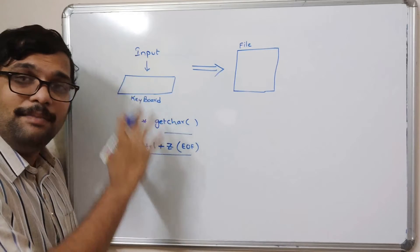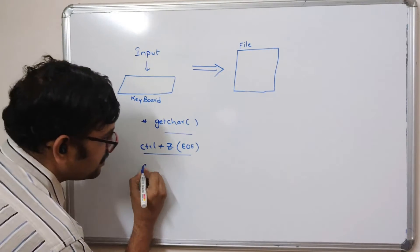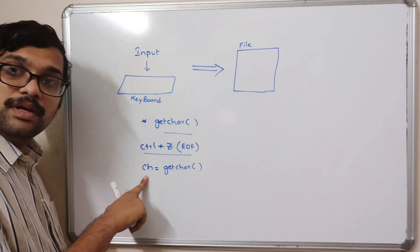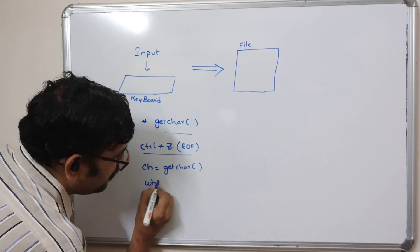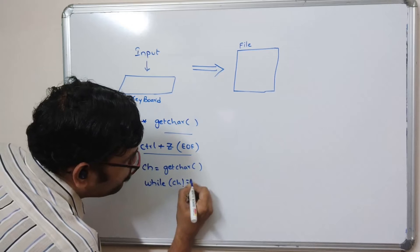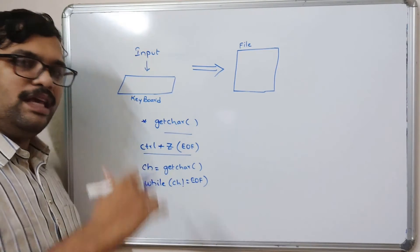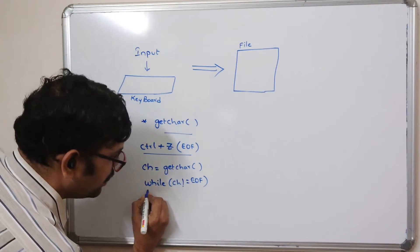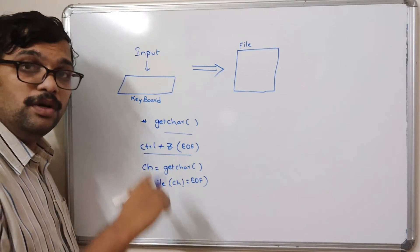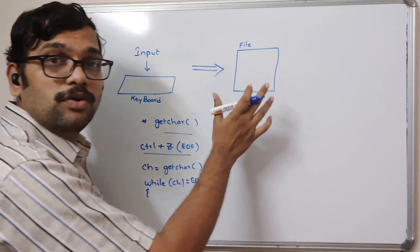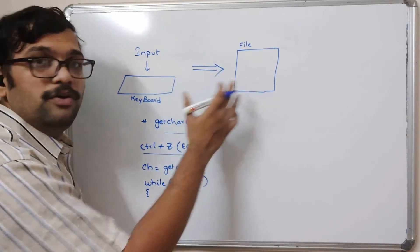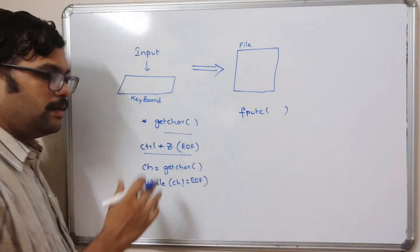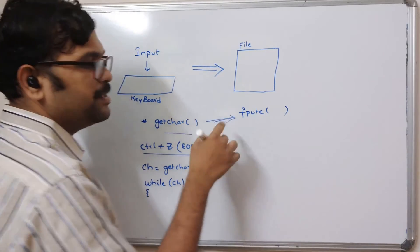Parallelly, we can write the same content into a file. We take a character variable: ch = getchar(), which reads a single character. Then we check while ch is not equal to EOF. If the user is giving input from the keyboard, EOF corresponds to Ctrl+Z. Unless the user presses Ctrl+Z, the same statements will be repeated. To write data into a file, we use the fputc() function.